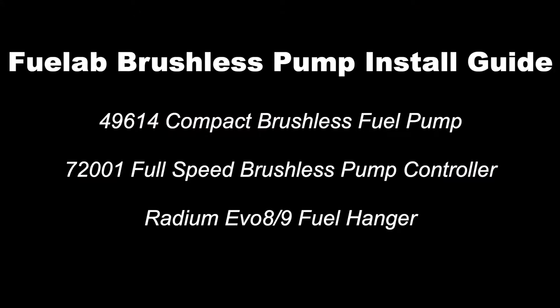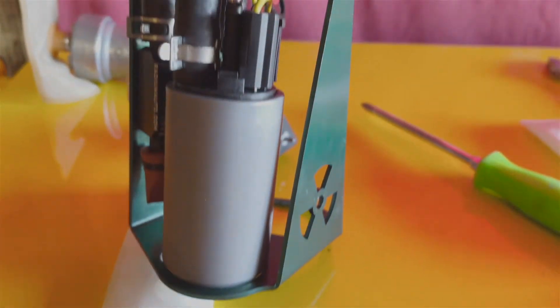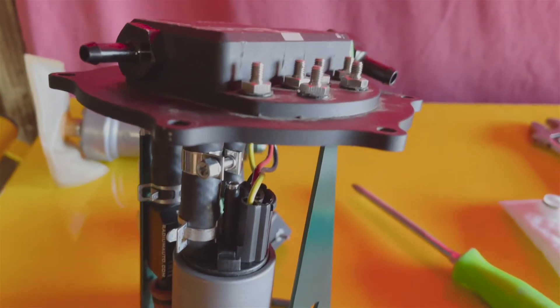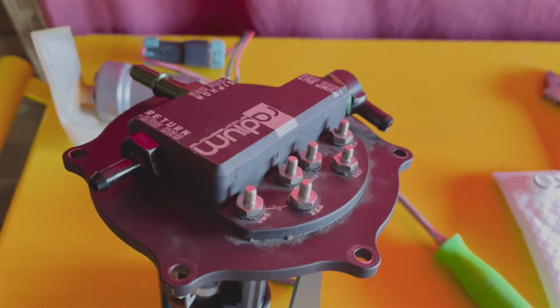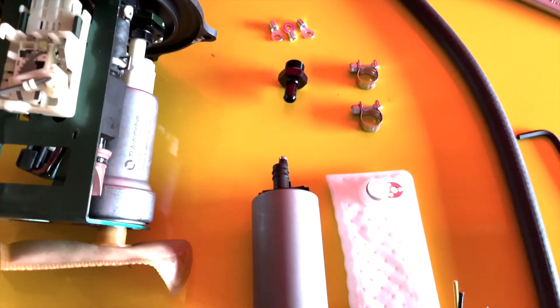Today we will be installing a 49614 compact brushless fuel pump and a 72001 full speed brushless pump controller into a Radium Evo 8.9 fuel hanger.